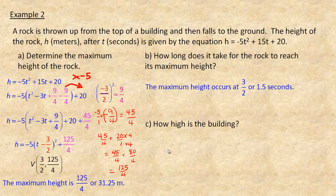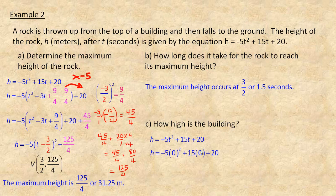In part C, it says how high is the building. We don't need vertex form to answer this. The rock was at the height of the building the moment it was thrown, which is the beginning — at time t = 0. Putting 0 in for time: −5(0)² + 15(0) + 20 = 0 + 0 + 20 = 20. So the building is 20 meters high. And that's the end of the tutorial.